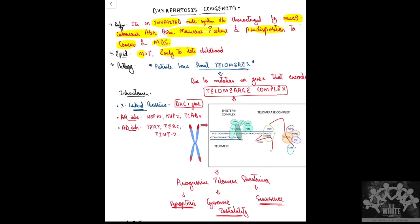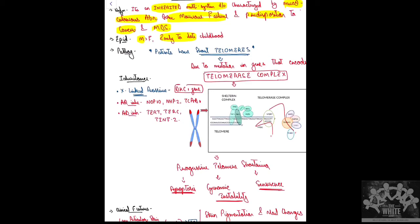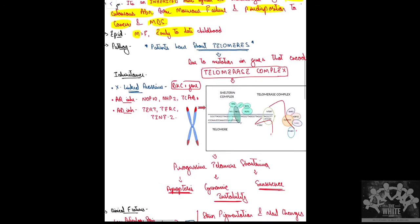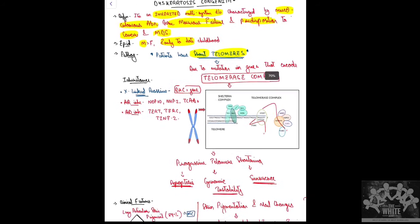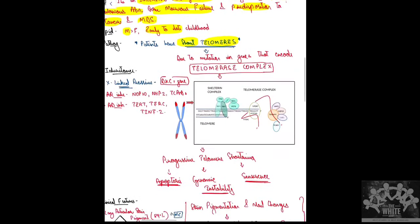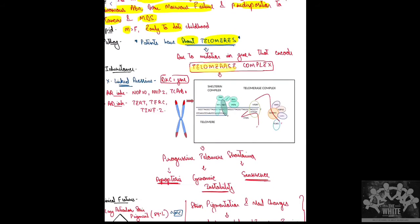The pathogenesis involves short telomeres. Telomeres are present at the ends of chromosomes, and as cell division takes place, their length keeps decreasing. The enzyme that prevents this decrease is called telomerase.